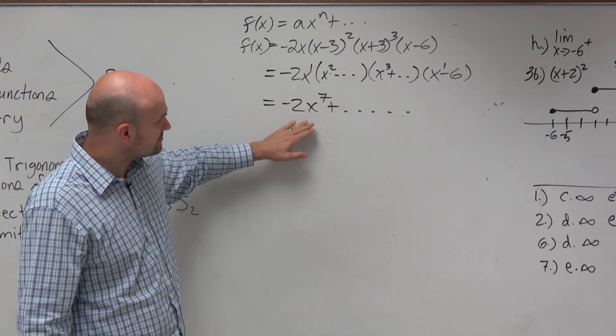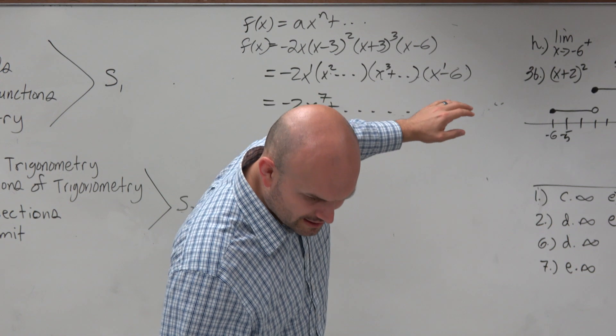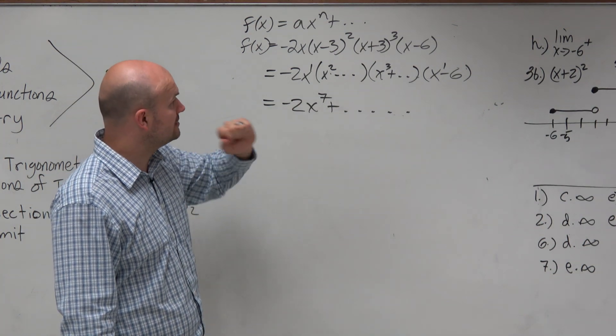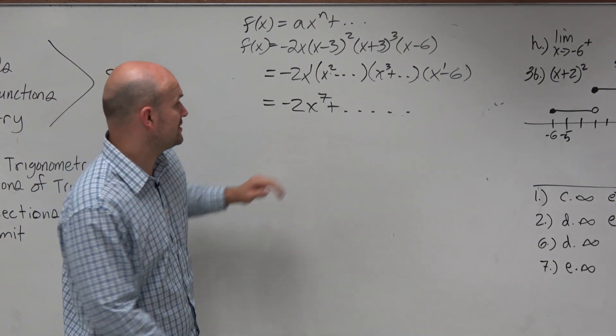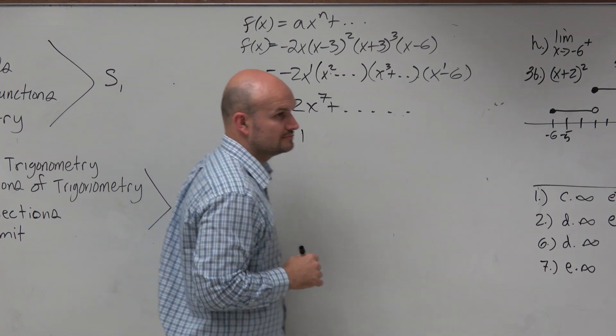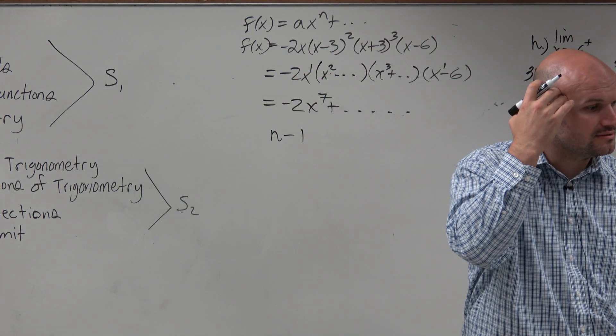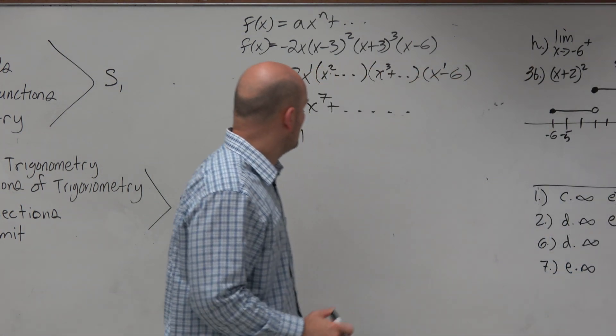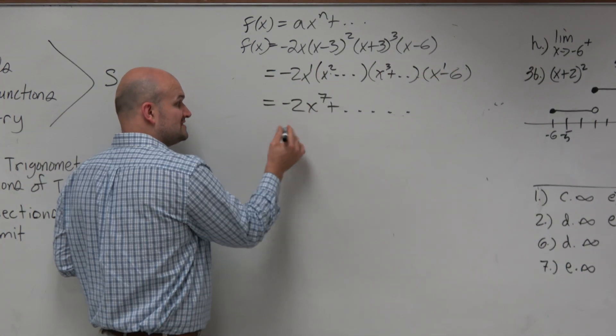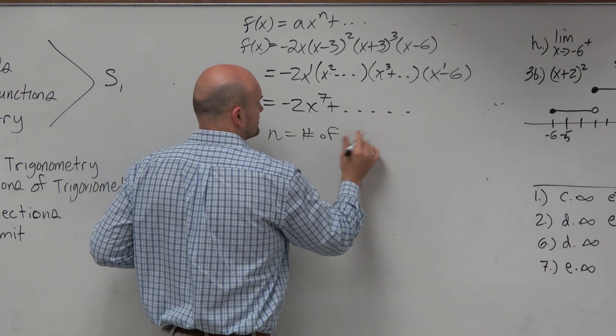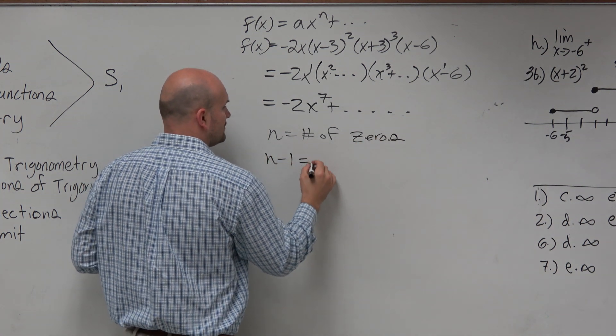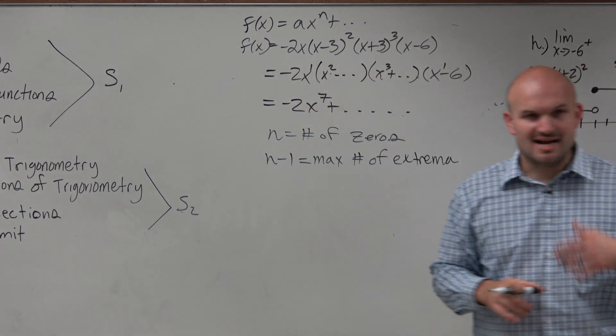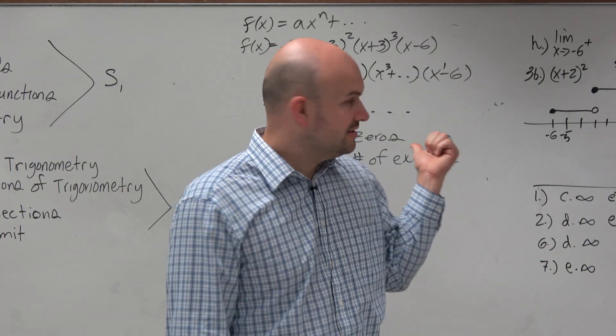Now, the important thing is the maximum number of extrema. The maximum number of extrema is actually n minus 1. And actually, I read this problem wrong. I apologize for that. So the max, so the degree, so the number of zeros, n equals the number of zeros. And n minus 1 equals the max number of extrema, right? But it actually just dawned on me when I was talking through this problem. That's actually not going to be our answer. The answer is not six.